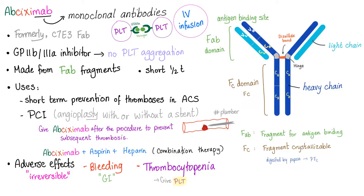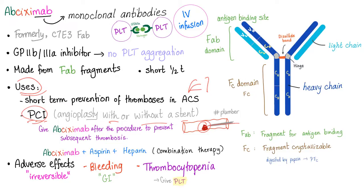Uses: since it has a short half-life, we use it for short-term prevention of thrombosis in acute coronary syndrome — an umbrella term that includes unstable angina, non-STEMI, and STEMI. Also used in percutaneous coronary intervention (PCI) with or without a stent. You treat the clot, but after the procedure the patient can form another clot, so add Abciximab to prevent future clot formation. There is a famous combo: Abciximab with aspirin with heparin.